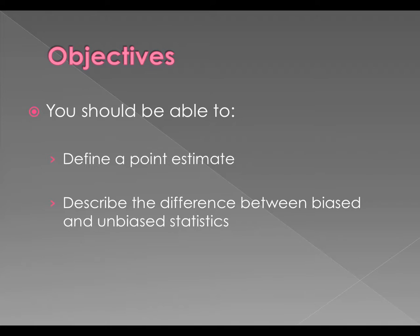So we are going to A, define what a point estimate is, and we're going to find a few of them. And then B, we're going to talk about the difference between bias and unbiased, which is something that we've done before.